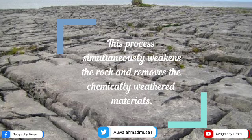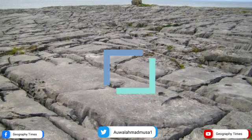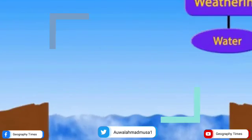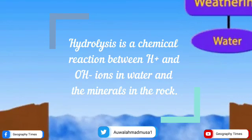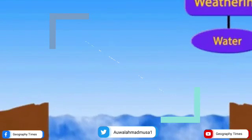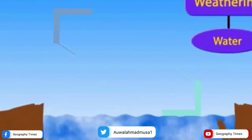The next form of chemical weathering is hydrolysis. Hydrolysis is a chemical reaction between H+ and O ions in water and the minerals in the rock.